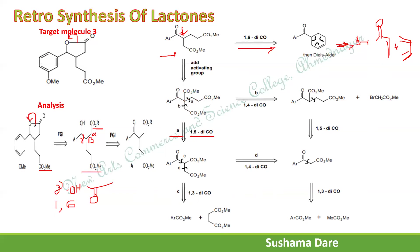Looking at the B disconnection: numbering gives positions 1, 2, 3, 4 — a 1,4-dicarbonyl compound. For a 1,4-dicarbonyl compound, the best disconnection is always the 2,3-bond in the direction of the more substituted alpha carbon. The more substituted alpha carbon is identified, and we disconnect in that direction. The remaining part is the enolate and the leaving group, written as BR.